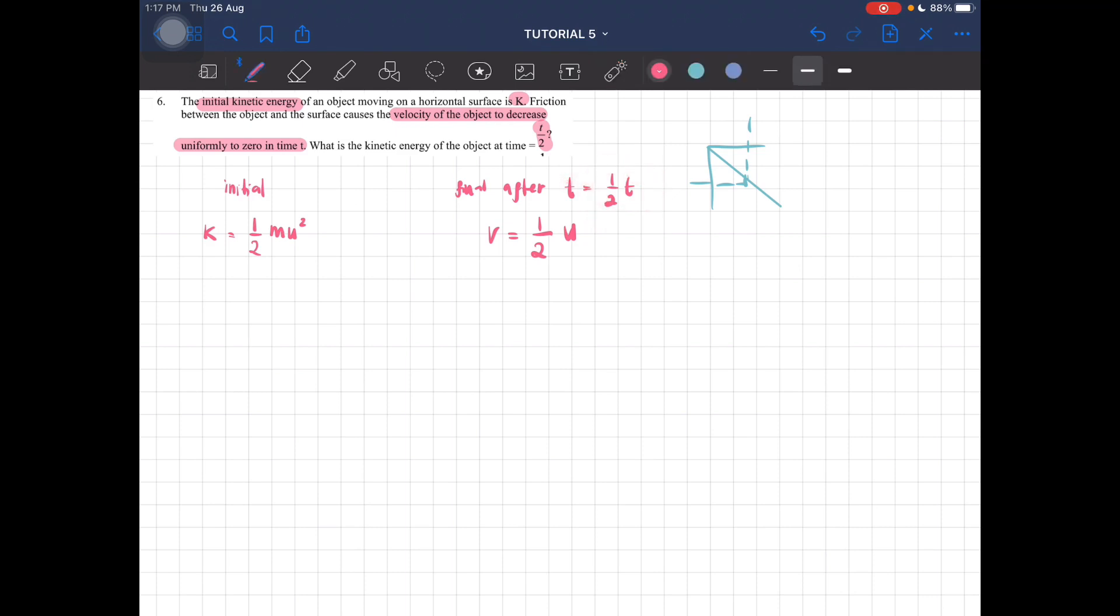Alright. So we can put k apostrophe is equal to half mv square, where v here is equal to half u square. Alright, so this one, simplify it until you get the original equation here.